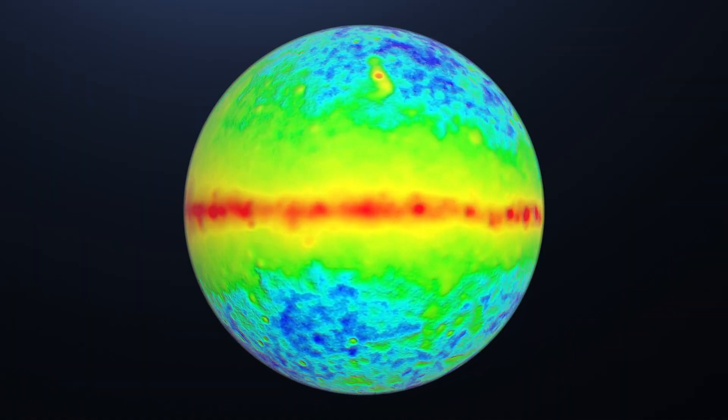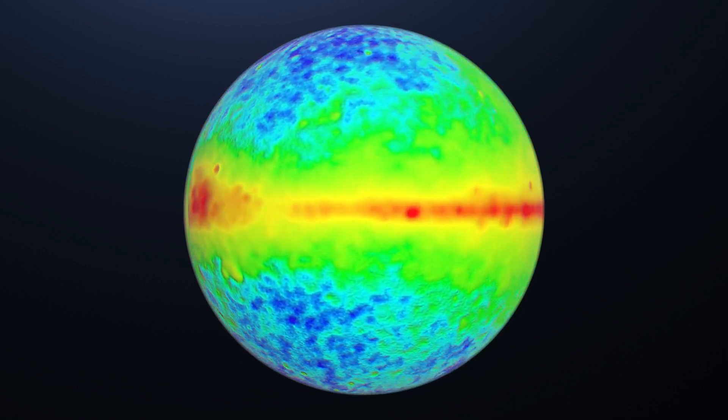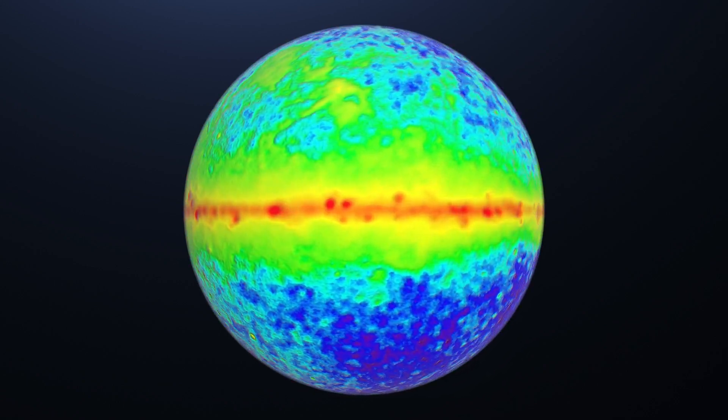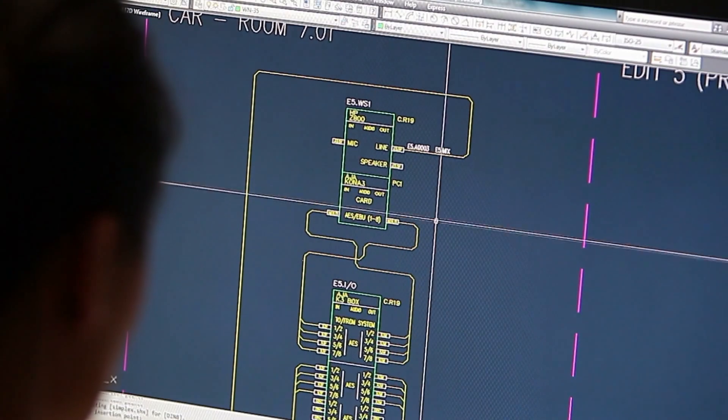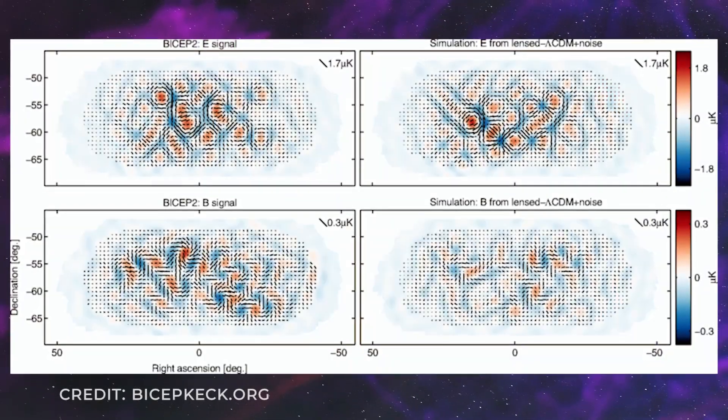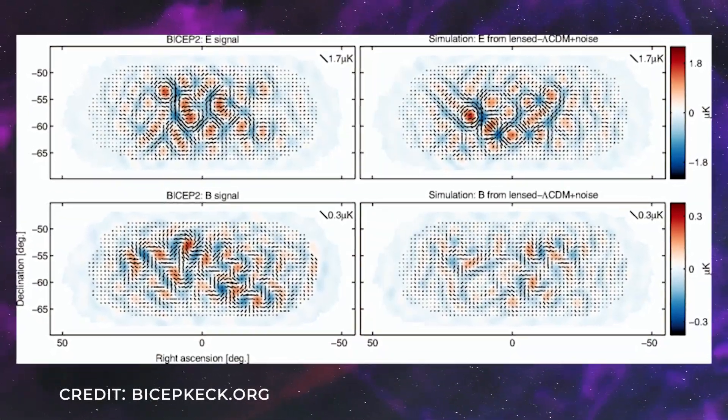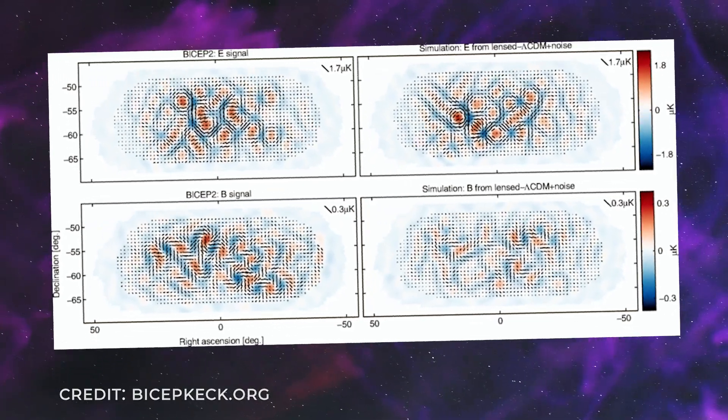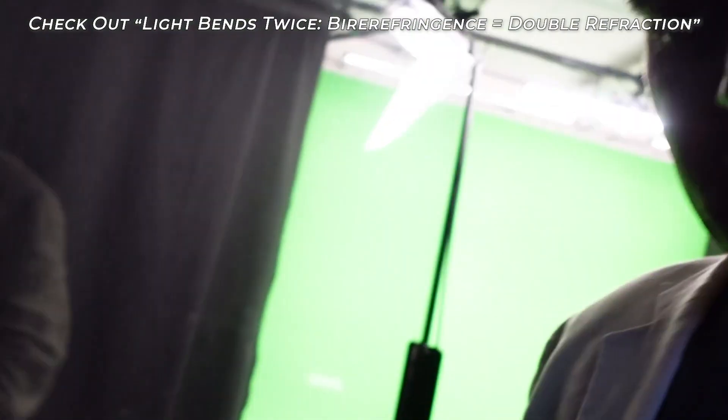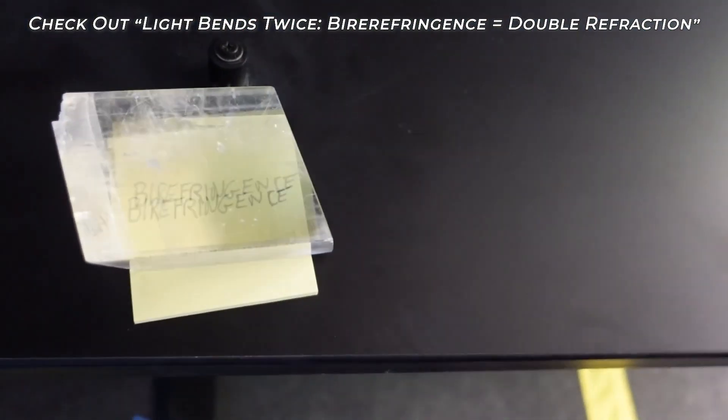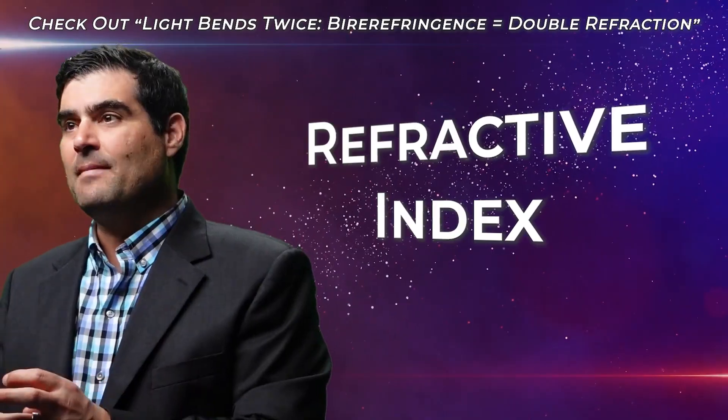But looking for Faraday rotation in the cosmic microwave background radiation is no easy feat. It does require ultra sensitive measurements of the cosmic microwave background's E mode and B mode polarization states, as well as the correlation between them. And it is somewhat degenerate with this type of birefringent effect that we spoke about in earlier videos and will continue to speak about.